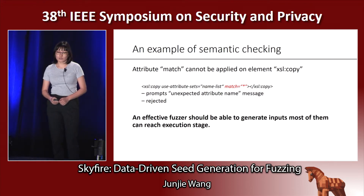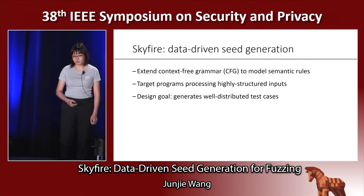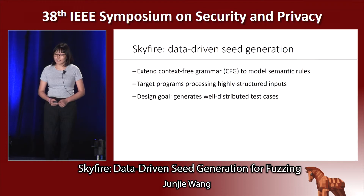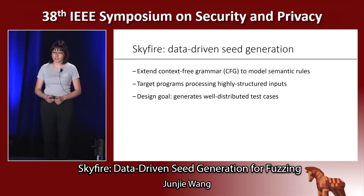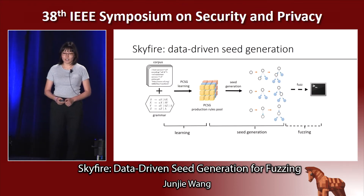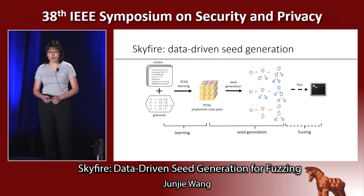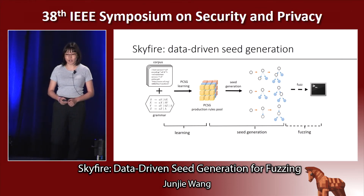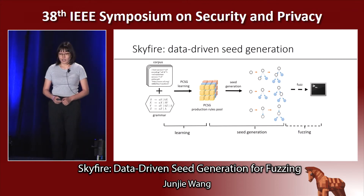So an effective fuzzer should be able to generate test cases where most of them can reach the execution stage. We propose SkyFire to extend the context-free grammar to model semantic rules. Our targets are programs that process highly structured inputs, and our design goal is to generate well-distributed test cases. SkyFire takes a corpus and a corresponding grammar as inputs, first parses the samples in the corpus using the grammar to parse trees, and then learns a probabilistic context-sensitive grammar from it — PCSG for short. Later, it uses PCSG to generate test cases for fuzzing.